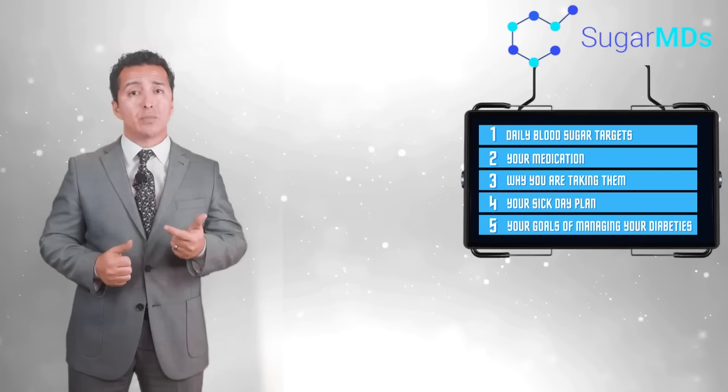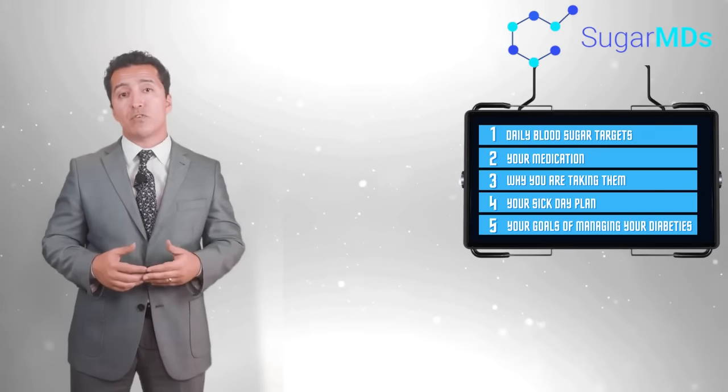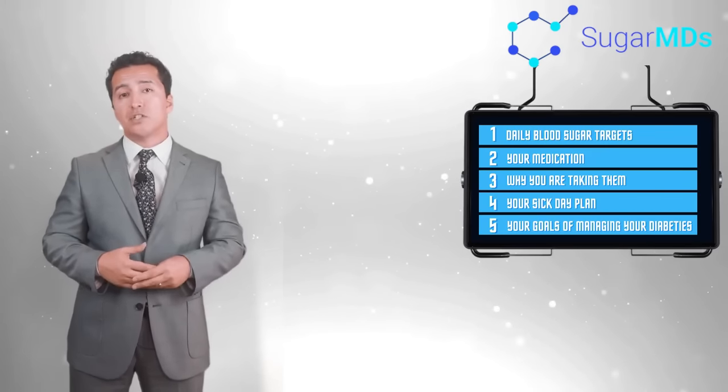Your care plan should include number one, daily blood sugar targets. Number two, your medications. Number three, why you're taking them, the reasons you're taking them. Number four, your sick day plan. Number five, your goals of managing your diabetes. And of course, your healthcare appointments, including your ophthalmologist, podiatrist, and so on. These things will all differ from person to person. Again, that's basically between you and your physician, and that will probably change during your physician visits in time.